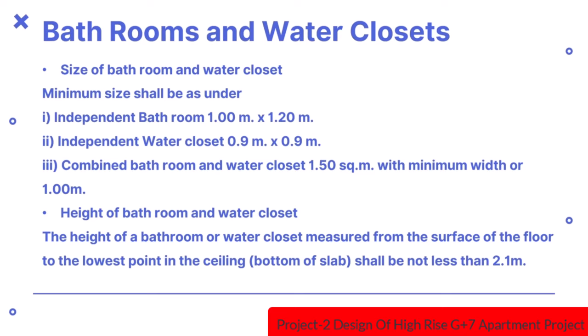For an independent bathroom, the minimum size should be 1m by 1.2m. For an independent water closet, the minimum size should be 0.9m by 0.9m. For a combined bathroom and water closet, the minimum area is 1.5 square meters with a minimum width of 1 meter. The height of a bathroom or water closet measured from the floor to the lowest point in the ceiling shall not be less than 2.1m.